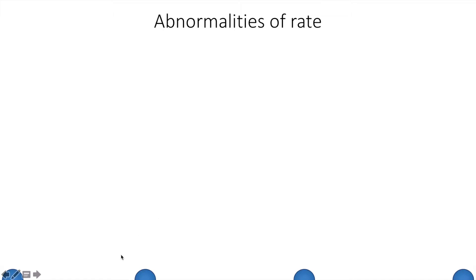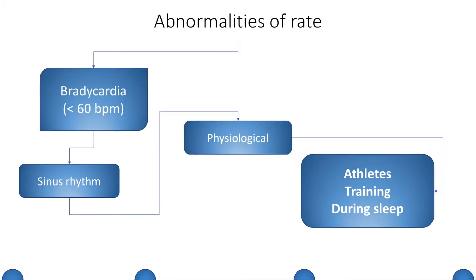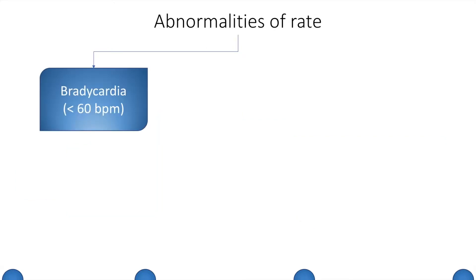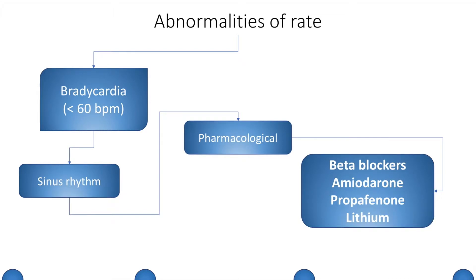We will now move on to bradycardia, as shown by these dots which indicate a pulse in this case being slow. The physiological causes of bradycardia in sinus rhythm include athletes who undergo training and during sleep. Pharmacological causes of bradycardia include beta blockers, amiodarone, the anti-arrhythmic drug propafenone, and the anti-manic drug lithium.